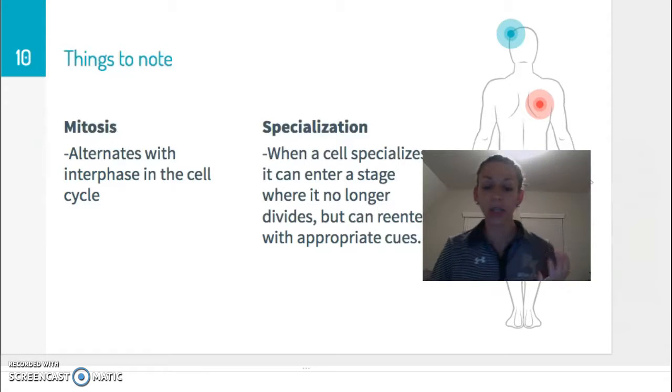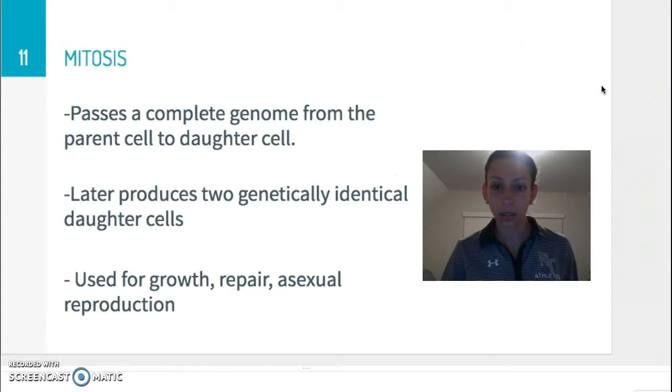So things to know. In mitosis, it's going to alternate with interphase in the cell cycle. Remember, mitosis is not the only part of the cell cycle. It's just one part where the nucleus is actually dividing, the genetic material's being split into two and divided. Specialization of the cell is when a cell specializes, it can enter a stage where it no longer divides or it can reenter with appropriate cues or environmental factors. And we'll talk about examples of those later on.